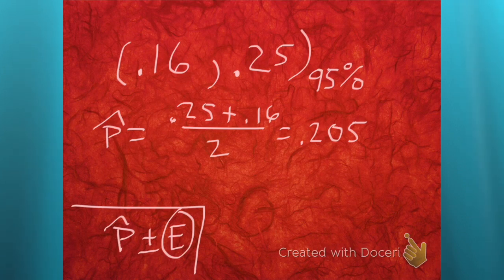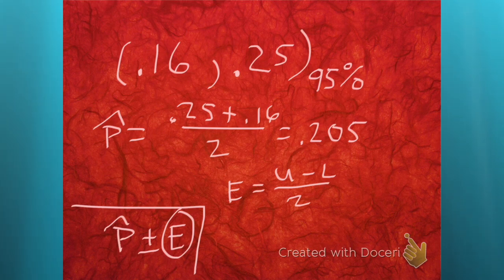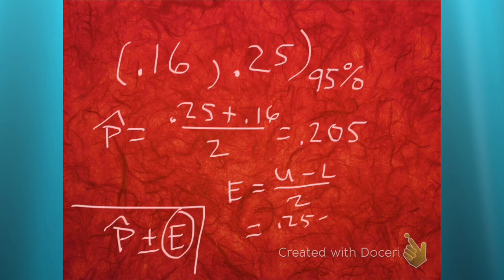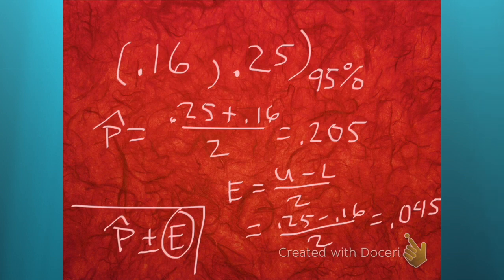The book has it as upper minus lower divided by 2. The book has it that way because the upper minus the lower is the width of that interval, and if you divide it by 2, you get half the width. So if you're finding the error with the book's formula, that's 0.25 minus 0.16 divided by 2, which gives 0.045. That's what you would have gotten had you taken the middle value and subtracted one of the endpoints.